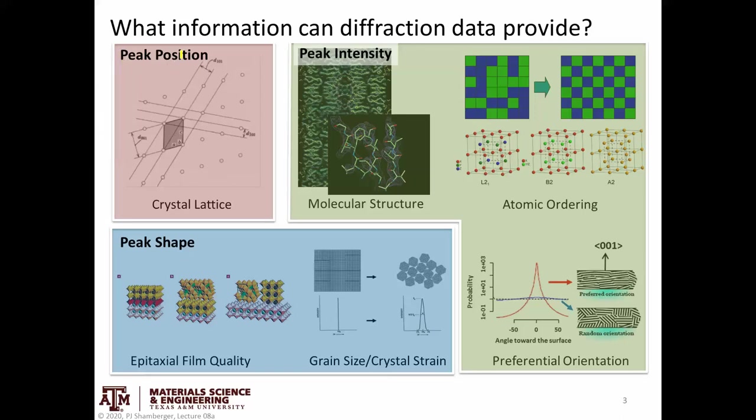Each of them we basically determine from one attribute of that diffraction spectra. Crystal lattice is basically determined solely from the peak position. Molecular structure, atomic order, preferred orientation, these are all determined from the intensity of peaks. Things like film quality and grain size, crystal strain, these are determined by peak broadening, by the shape of that peak. The rest of this video, we're really going to focus on this first box and we'll hit these other boxes at a later point.